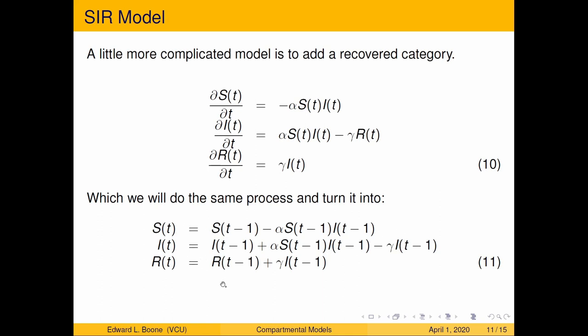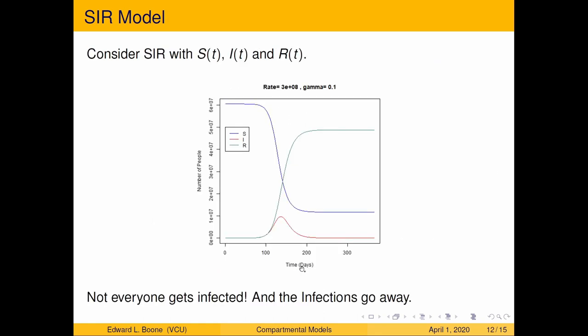Here is our thing presented as a difference equation. These are called difference equations. And these are pretty easy to look at. You just say, today is yesterday minus the people who got infected. Today, the infected are how many infections we had yesterday, plus the number who became infected, minus the number of people who recovered. And the recovered just becomes how many people recovered yesterday, plus the number that recovered yesterday. Pretty easy.